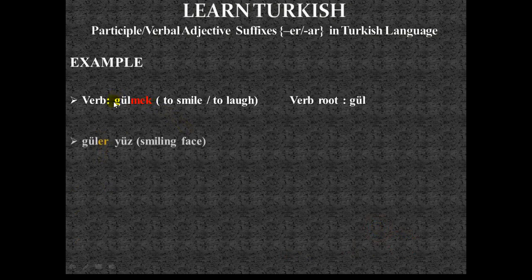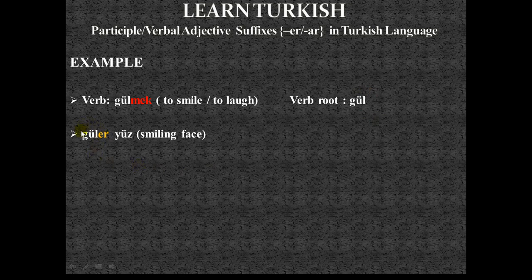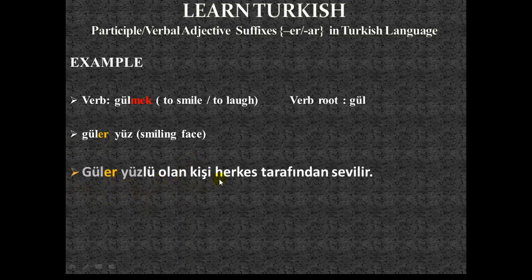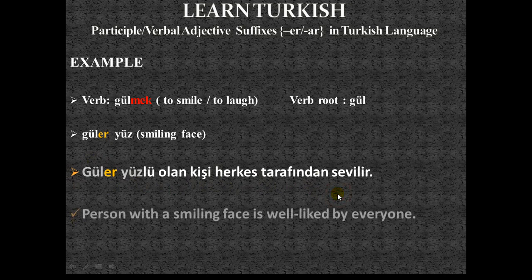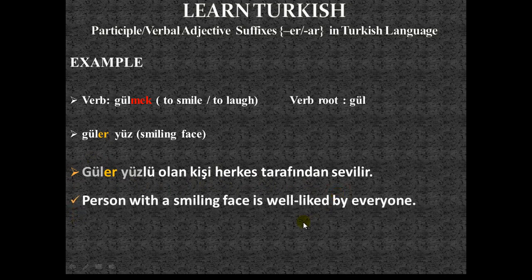Our verb is 'gülmek,' to smile or to laugh. The verb root is 'gül,' so the derived verbal adjective is 'güler.' The noun used here is 'yüz' (face), giving 'güler yüz' — smiling face. Example sentence: 'Güler yüzlü olan kişi herkes tarafından sevilir' — a person with a smiling face is well liked by everyone.